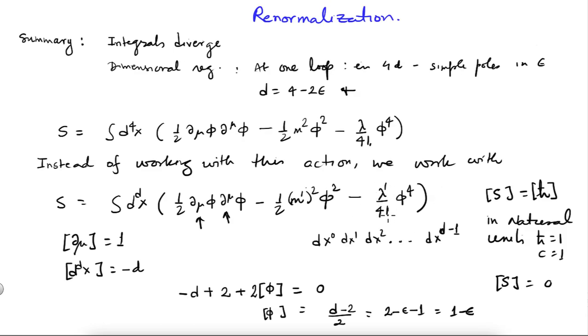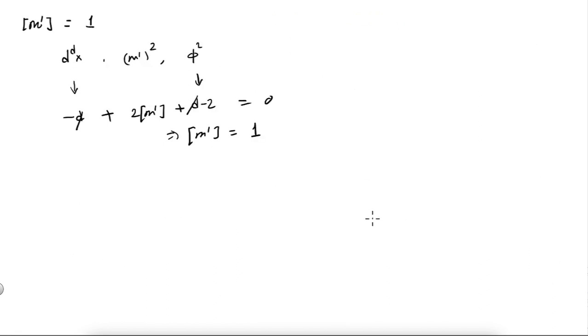Recall that lambda, or equivalently lambda-prime, was dimensionless in four dimensions. Let us see what happens when we go to d dimensions — whether lambda-prime is still dimensionless.